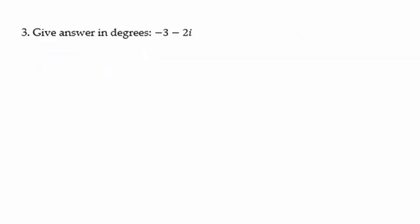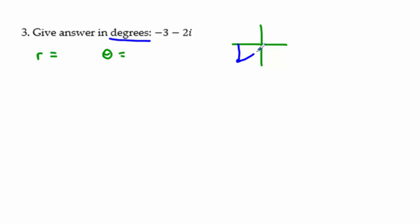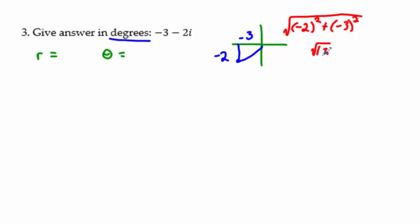Problem 3 says to give the answer in degrees. Our number is −3 − 2i. Negative 3 means go left 3, negative 2 means go down 2, so our point is in the third quadrant. This is not a special right triangle, so r = √((-2)² + (-3)²) = √(4 + 9) = √13.